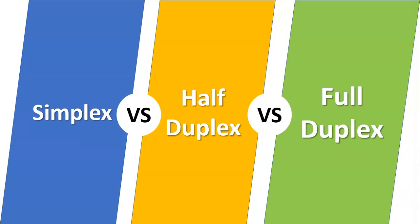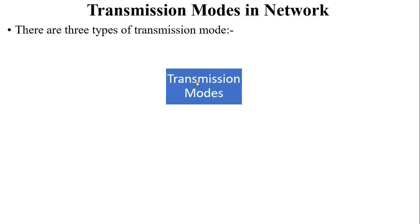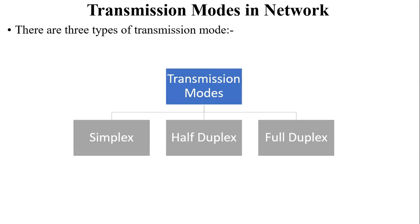Hello friends, welcome back to my channel. I'm Chirag. In this video I am going to discuss and differentiate between the transmission modes. We have already discussed about the transmission modes in detail in a previous video. There are three types of transmission modes in a network: simplex, half duplex, and full duplex. In this video I have compared all three transmission modes.